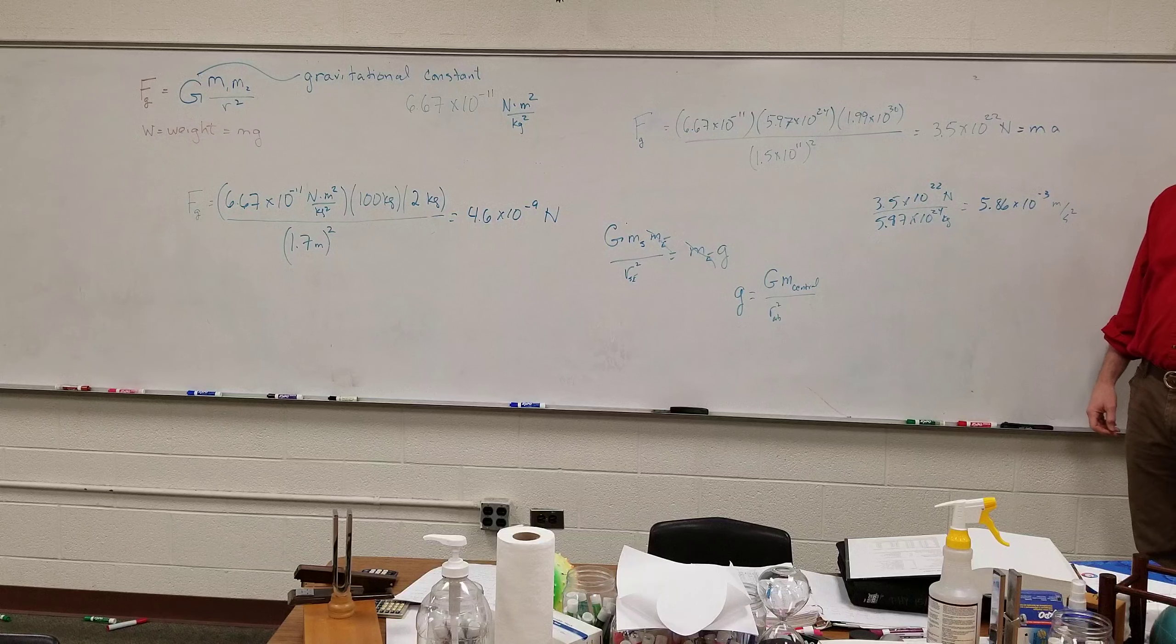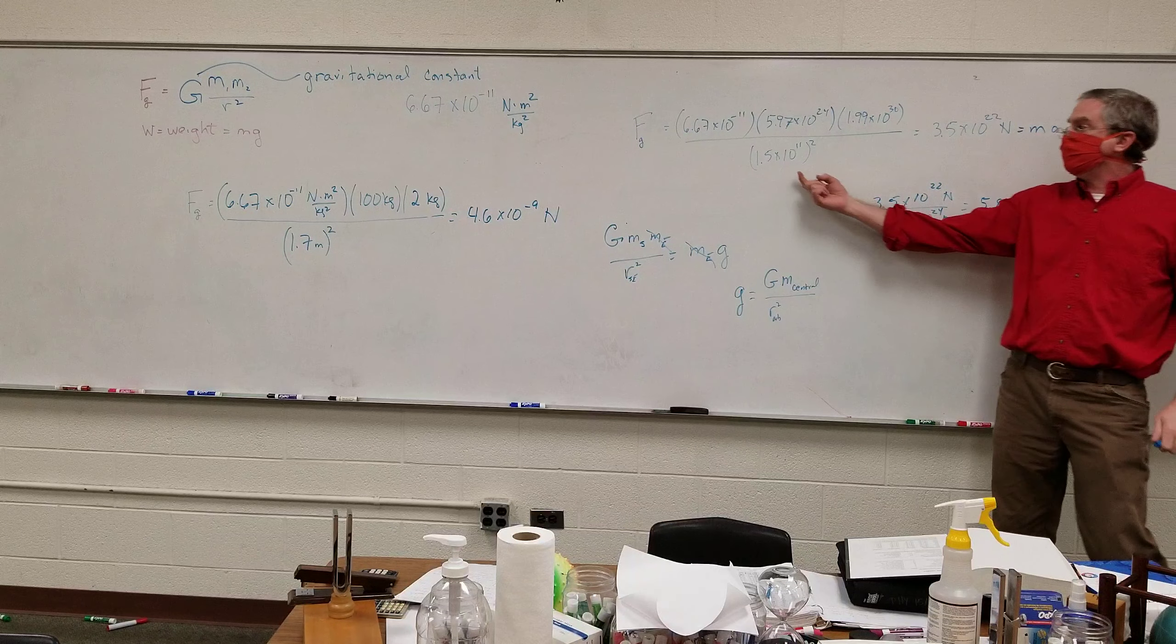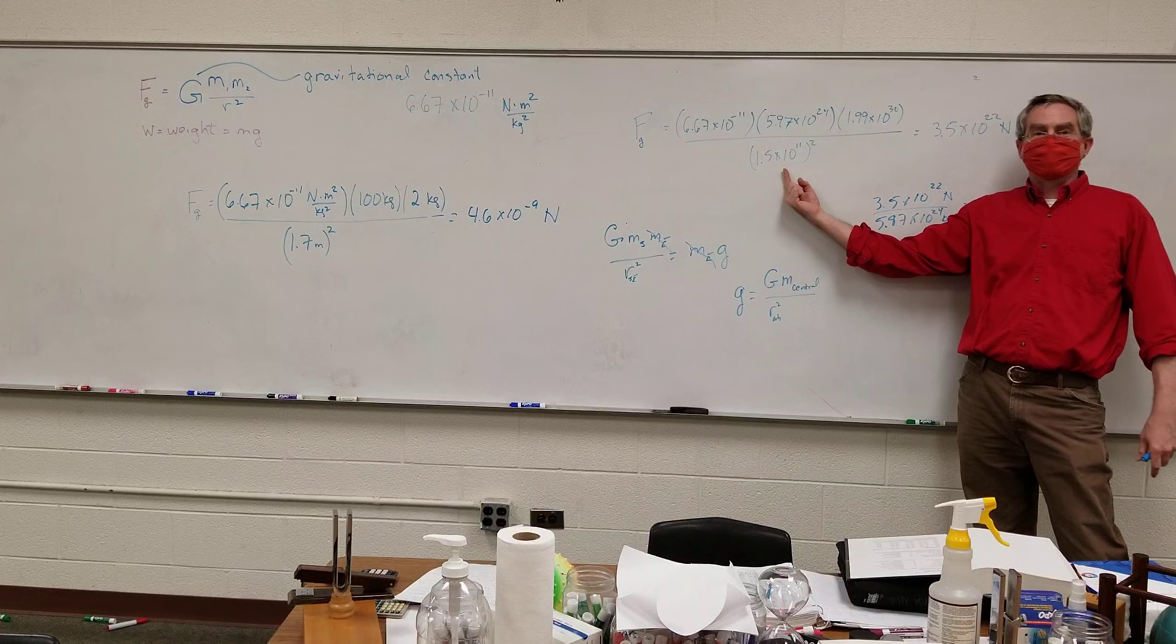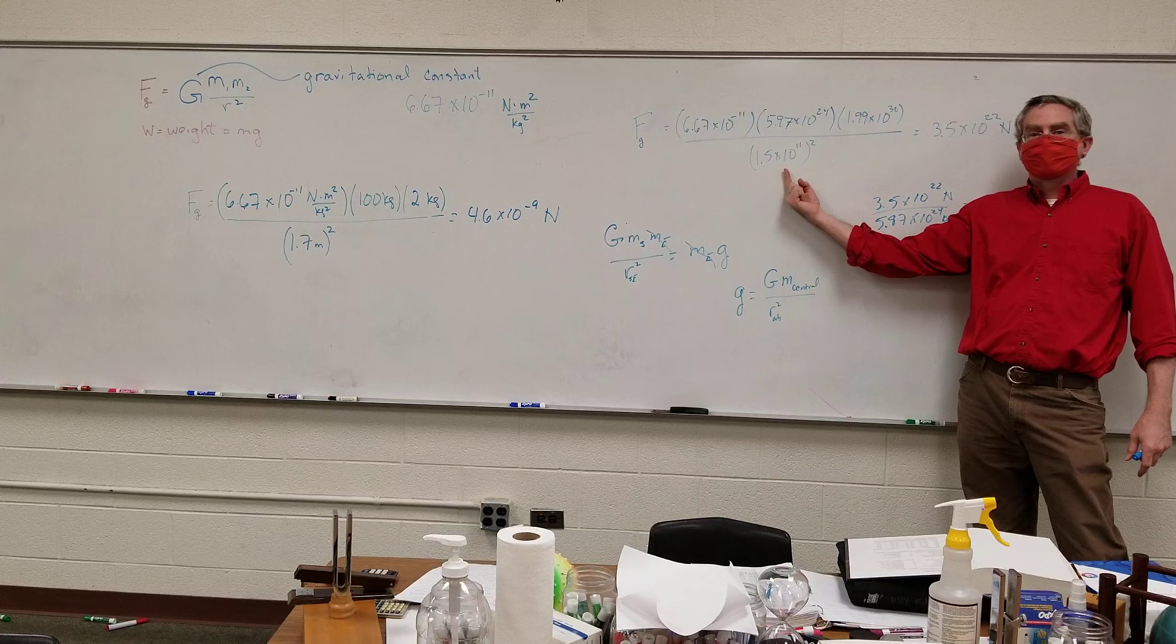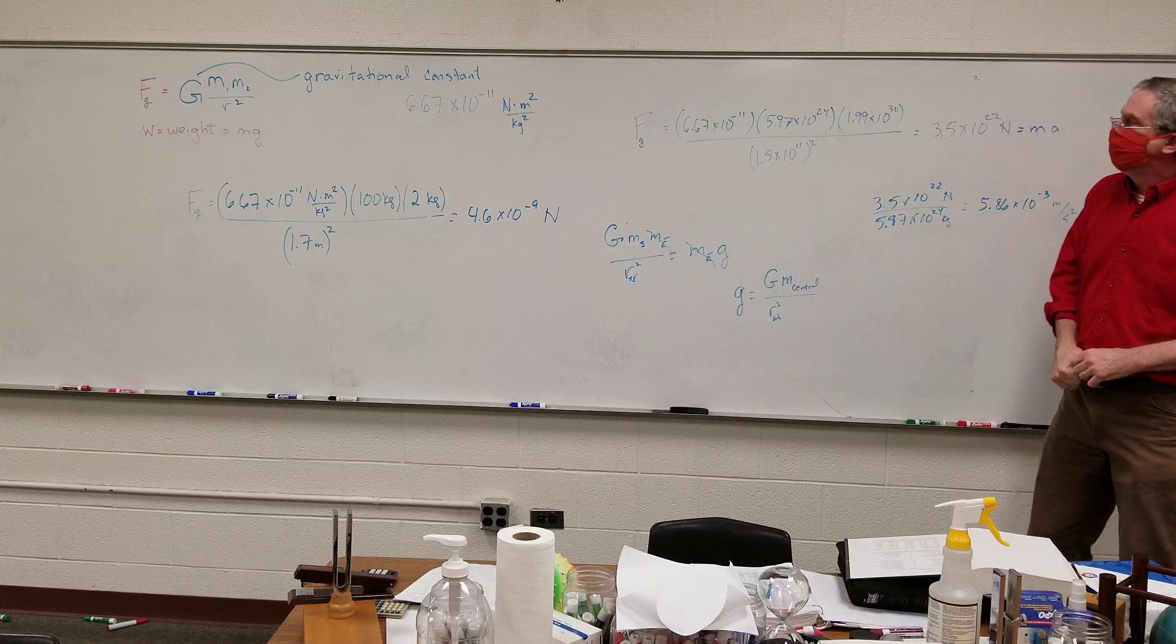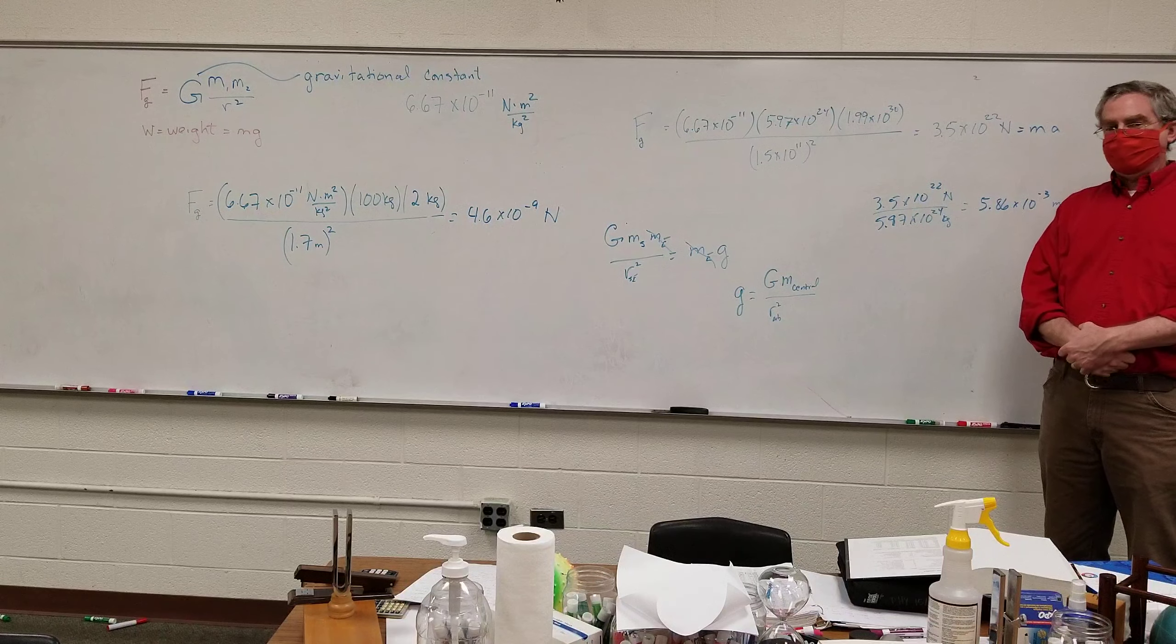What's the 1.5? That is the orbital radius of the Earth. That's roughly the distance from Earth to Sun. One astronomical unit.